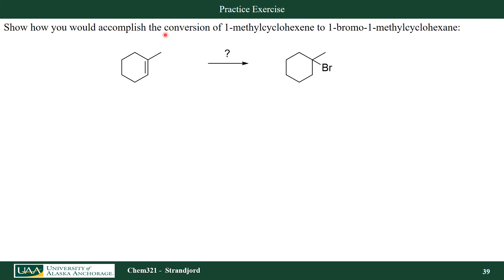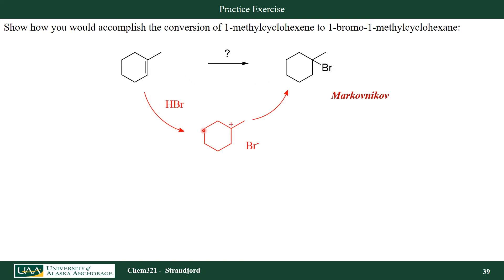Let's do a practice exercise showing the mechanism for taking 1-methylcyclohexene and converting it into 1-bromo-1-methylcyclohexane. If I look at this, I want to first determine if that is Markovnikov or anti-Markovnikov addition. I've added the hydrogen to the least substituted and the bromine to the most substituted, so that would be Markovnikov addition. I could accomplish this by just taking HBr, forming my carbocation intermediate which is very stable, and reacting with bromine to form this tertiary alkyl halide.